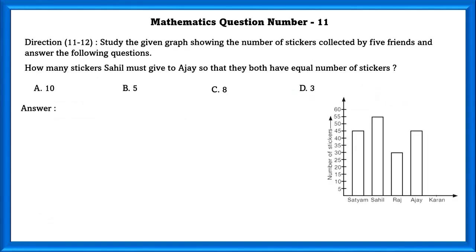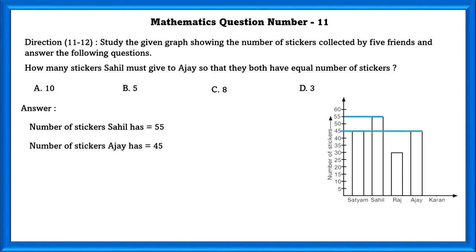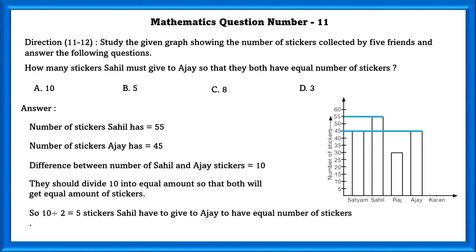Mathematics question number 11. Study the given graph showing the number of stickers collected by 5 friends. How many stickers must Sahil give to Ajay so that they both have equal number of stickers? Sahil has 55 stickers and Ajay has 45. The difference is 10. They should divide 10 equally, so 10 divided by 2 equals 5. Sahil has to give 5 stickers to Ajay to have equal numbers.